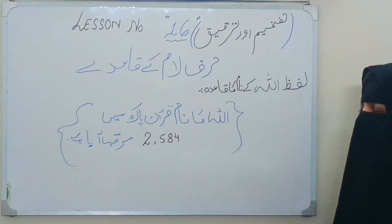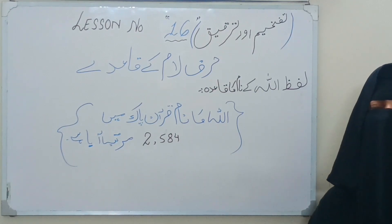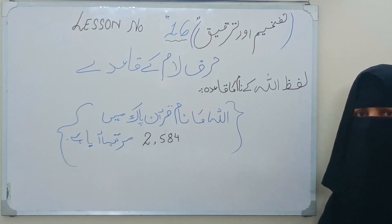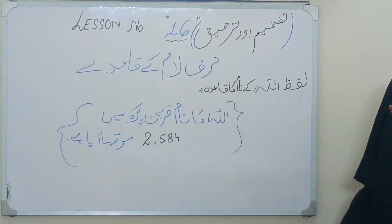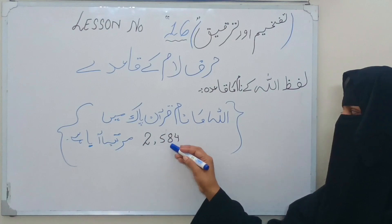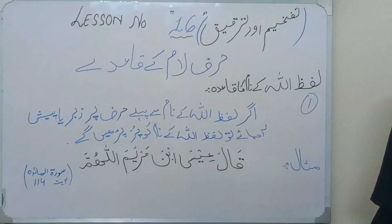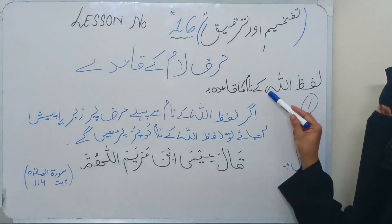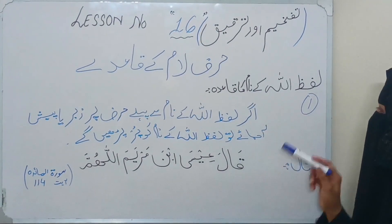ان قائدوں کی تفصیل جاننے سے پہلے — قرآن پاک میں اللہ سبحانہ وتعالیٰ کا جو نام ہے وہ 2,584 ٹائم آیا ہے۔ لفظ اللہ کے نام کا قائدہ: